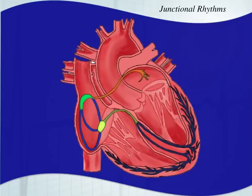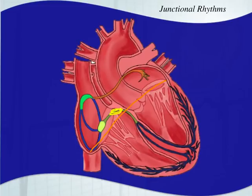Right along that line there. To be more specific, it's right around where the atrial septum and the ventricular septum meet. We include everywhere around the AV node and the superior portion of the His bundle as the AV junction. This is another area within the heart that can stimulate an impulse.